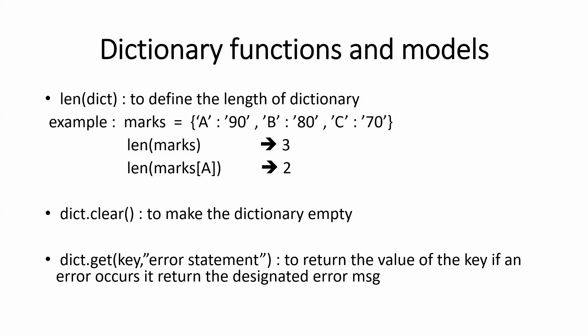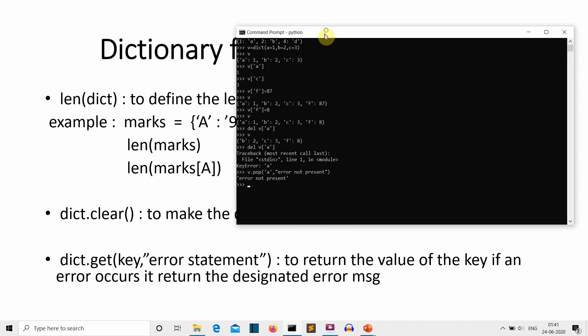Now let's look at functions and methods for dictionaries. First is len(). Just as with strings and lists, we can use len() to get the length of a dictionary. Writing len(v) returns the number of key-value pairs — in our case, 3. You can also get the length of a specific element's value by writing len(v['f']), which gives the length of the value stored at key 'f'.